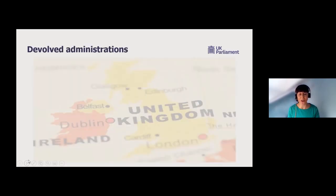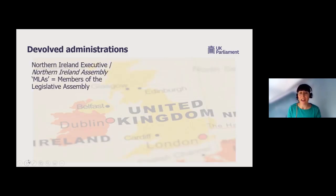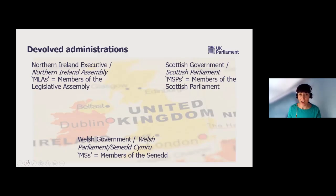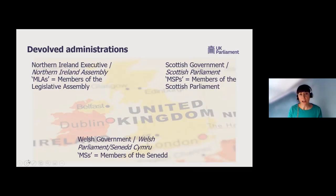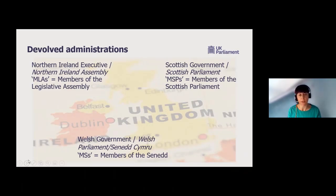We're going to be talking today about the devolved context and devolved administrations. In the UK, we have three devolved areas: the Scottish Government and the Scottish Parliament; the Northern Ireland Executive and the Northern Ireland Assembly; and the Welsh Government and the Welsh Parliament. If you live or work in one of these devolved areas, there is an extra layer of representation and decision-making between the UK Parliament in Westminster and any more local government. There are representatives such as MSPs, MLAs, and MSs sitting in the legislatures or assemblies in those devolved areas.